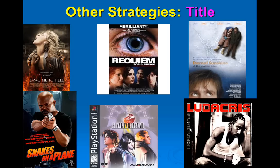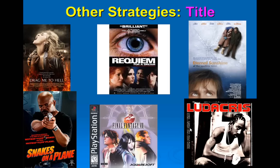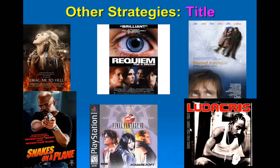You also have to talk about one other strategy for each of your texts. One option is the title. If one of your texts has a particularly interesting title, you can discuss that as a strategy. For example, Requiem for a Dream, Drag Me to Hell, or Snakes on a Plane — you hear these titles and you want to know what they're about. If a title makes someone want to listen to that album, watch that movie, or play that video game, it's a strategy. But it needs to be really good — the kind that makes people say 'wow, that sounds cool' without knowing anything else about it.